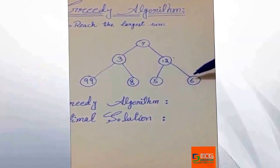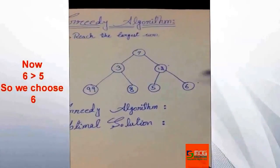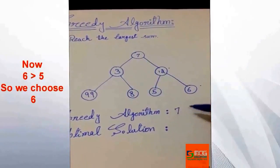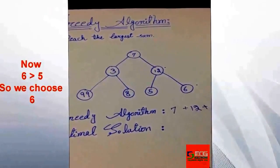Next nodes are 5 and 6, and the greedy algorithm will choose 6 as it is the local optimal solution. So the final solution for the greedy algorithm is 7 plus 12 plus 6.